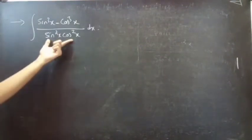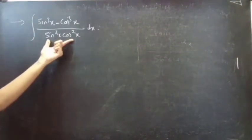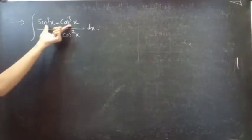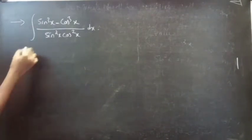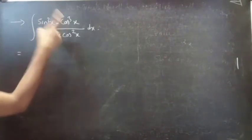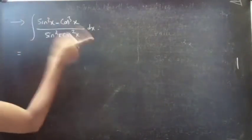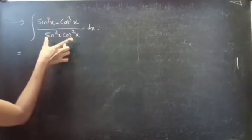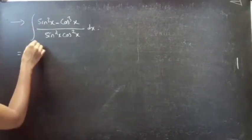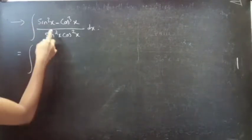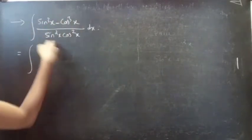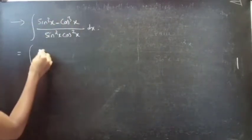In the denominator we have one term and in the numerator we have two terms. Since we have two terms in the numerator and one term in the denominator, we can split the whole fraction into two fractions.